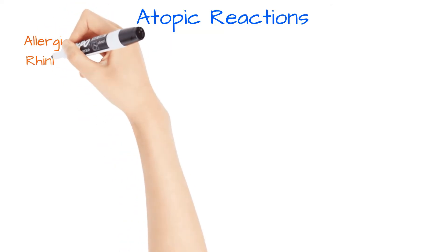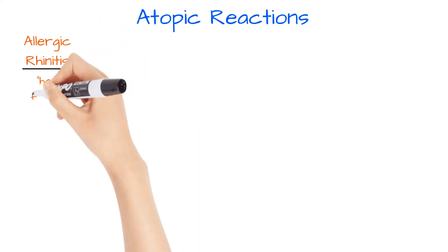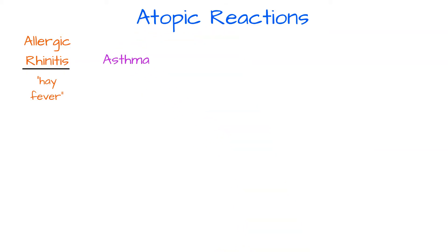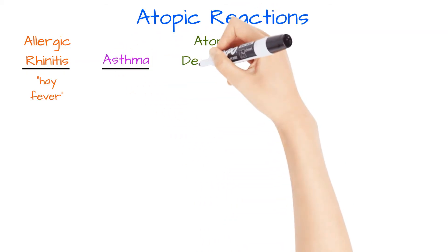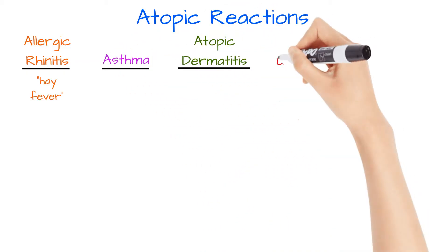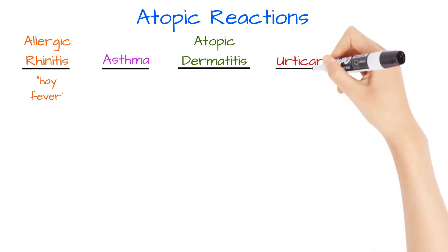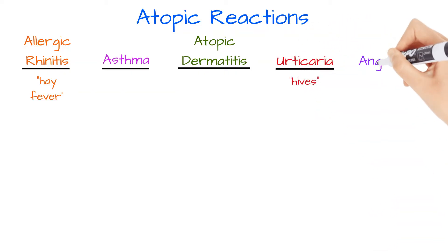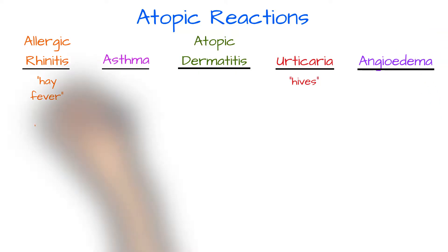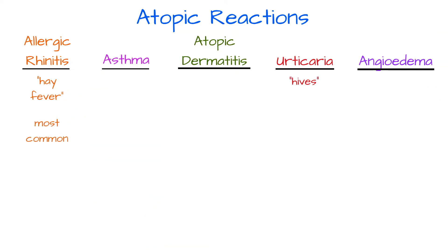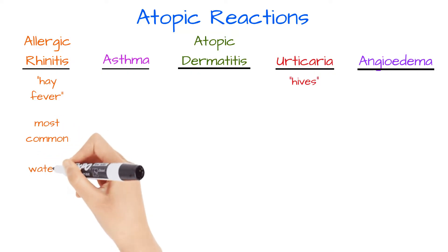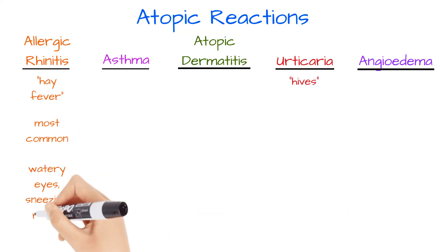Some of these include allergic rhinitis, also known as hay fever, asthma, atopic dermatitis, urticaria, also known as hives, and angioedema. Hay fever is the most common and is primarily caused by airborne substances such as pollen, molds, and pet dander. Symptoms include itchy, watery eyes, sneezing, and runny nose.